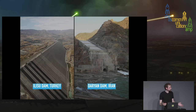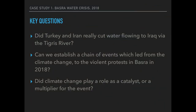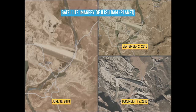This is very easy because dams are such huge structures, and even from very low resolution imagery taken every day, you can see what these dams are doing and watch water filling up. Other questions we also want to ask are: how can we establish a chain of events leading from these dams to protests in Basra, and what role did climate change play?